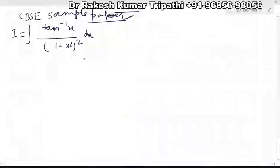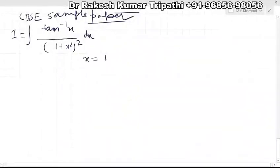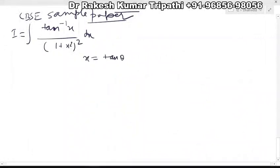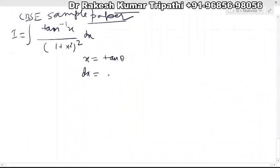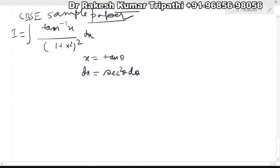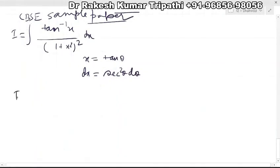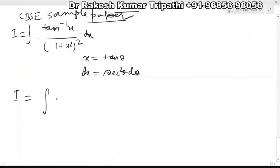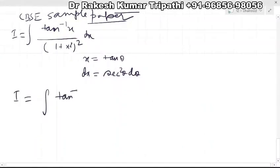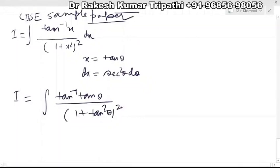For this integral we shall put x equal to tan θ, so dx will be sec² θ dθ. Therefore the integral I will be tan inverse of tan θ, which means the tan inverse tan θ is θ, divided by (1 + tan² θ)² into sec² θ dθ.